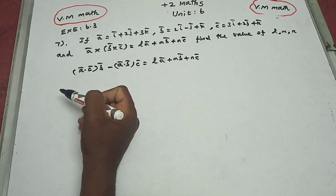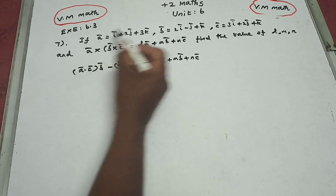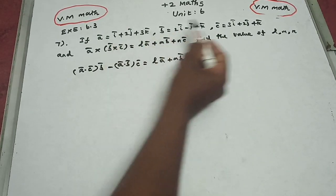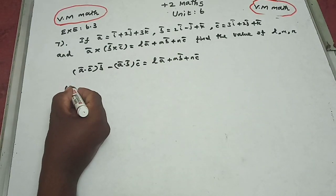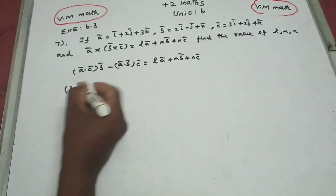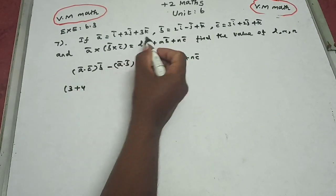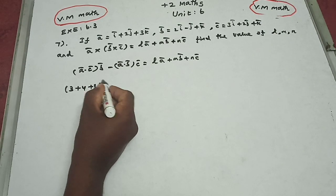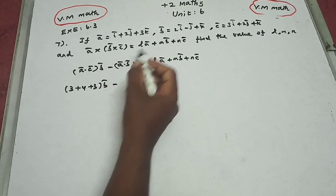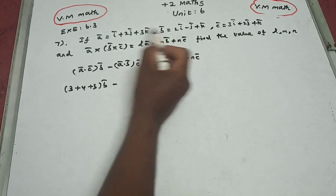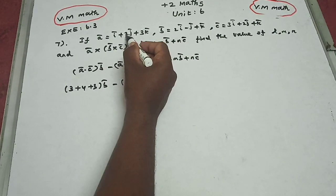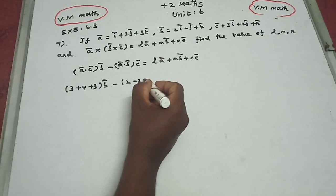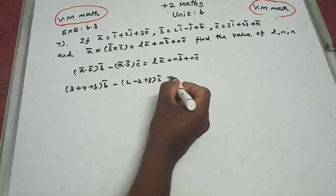First, compute a·c: (1×3) + (2×2) + (3×1) = 3 + 4 + 3 = 10. Then into b vector. Minus a·b: (1×2) + (2×-1) + (3×1) = 2 - 2 + 3 = 3. Into c vector.